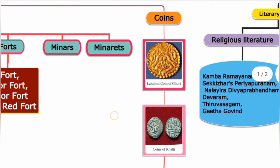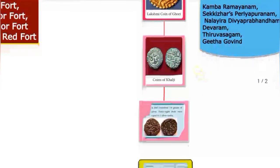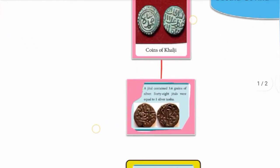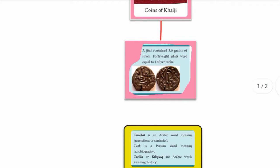On coins: in the period of Muhammad Gori, there is a coin featuring a portrait of Goddess Lakshmi, which helps us identify the era. Coins of the Khalji dynasty include the jital, where one jital equals 3.6 grains of silver, and 48 jitals equal one silver tanka.